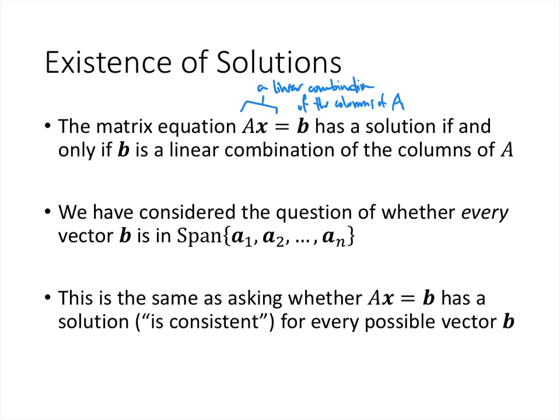We've also considered whether every vector is in the span of some vectors a1 through a_n. If those vectors are the columns of A, then that's the same as asking whether the matrix equation Ax = b has a solution for every possible vector b — and we were going to learn how to answer that question.